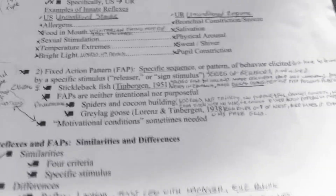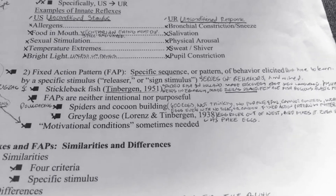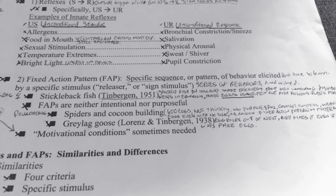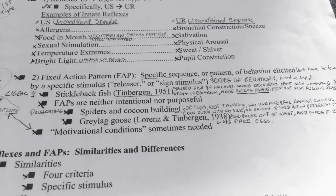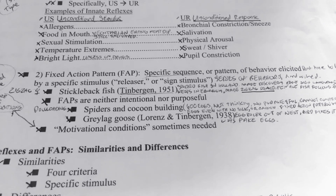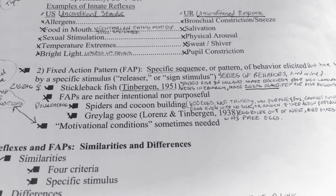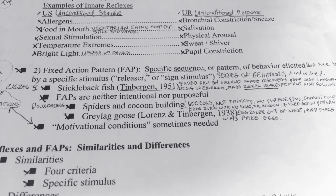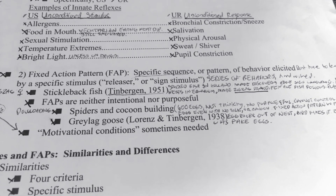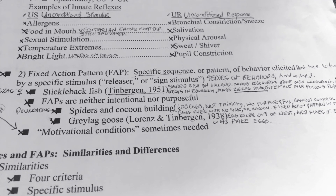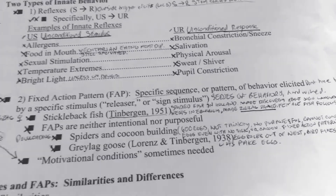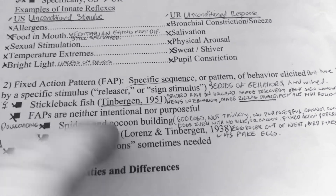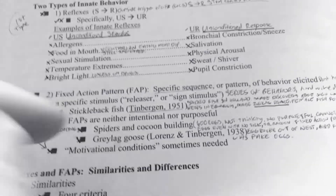Fixed action patterns are completely different. There is a specific sequence or pattern of behavior that is elicited. This doesn't happen with humans — we're able to react to stimuli in different ways. Animals that do have fixed action patterns need to see a sign or a releaser to trigger the behavior.